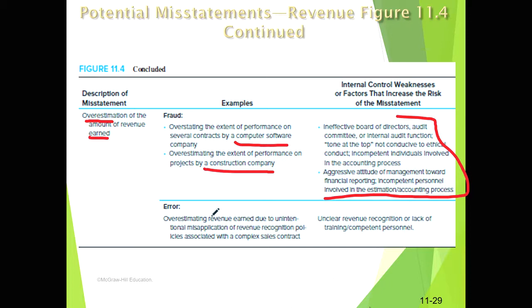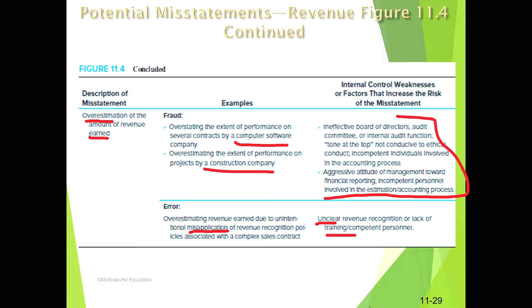These are potential areas that can be manipulated, often driven by control environment factors such as incentives for aggressive revenue reporting or aggressive targets. With complexity there's also always a potential for misapplication — for instance, a new industry where guidance is unclear on how a new type of transaction or contract should be recognized, or a lack of competent, trained individuals for proper revenue recognition.